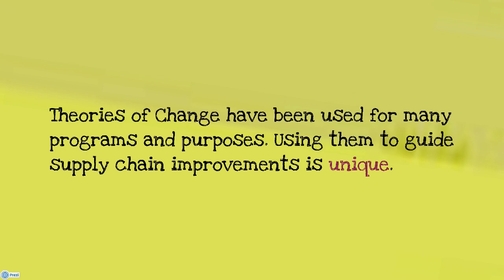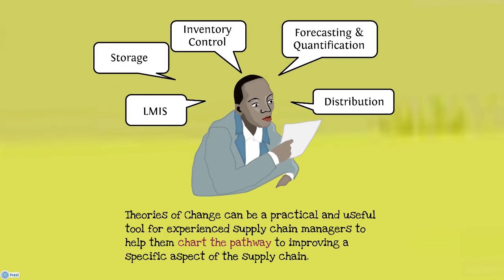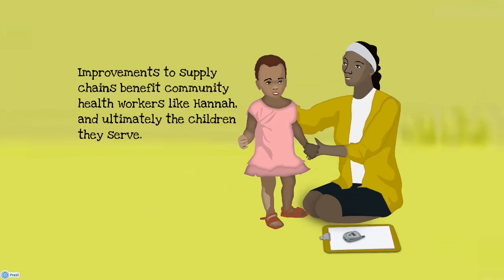Theories of change have been used for many programs and purposes, but using them to guide supply chain improvements is unique. Theories of change can be practical and useful tools for experienced supply chain managers to help them chart the pathway to improving a specific aspect of the supply chain. As programs and supply system managers understand and address priority supply chain gaps and challenges, they are more able to implement changes. Theories of change can also evolve to help identify and tackle newer issues. Improvements to supply chains benefit community health workers like HANA and, ultimately, the children they serve.